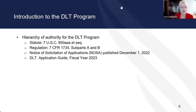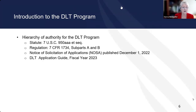The DLT program was established by statute in the U.S. Code 950AAA. The regulation that governs us is 7 CFR 1734, parts A and B. We published the Notice of Solicitation of Applications on December 1st for the 60-day window we're currently in. We have given you an application guide, the link to which is in grants.gov and also on our website.